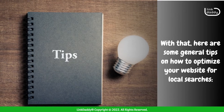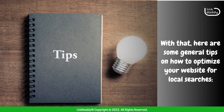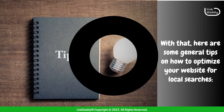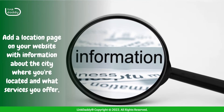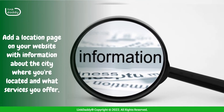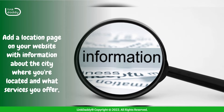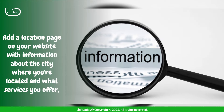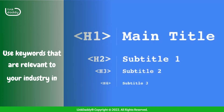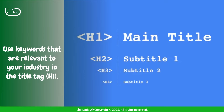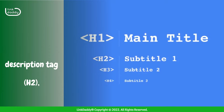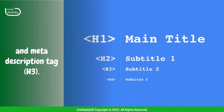With that, here are some general tips on how to optimize your website for local searches. Add a location page on your website with information about the city where you're located and what services you offer, including phone numbers and maps. Use keywords that are relevant to your industry in the title tag, description tag, and meta description tag.